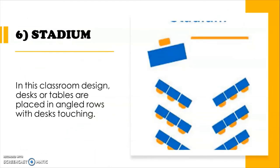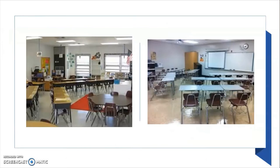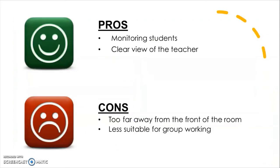The sixth one is stadium. In this classroom design, desks or tables are placed in angled rows with desks touching. Students give full attention to the teacher or students at the front of the classroom. This arrangement also uses less floor space. Pros: it enables the teacher to see what every student is doing because desks are angled against a fixed point at the front, and it gives all students a clear view of the teacher. Cons: it may place some students too far away from the front, depending on how many rows are used, and it is less suitable for classrooms that often require group work.